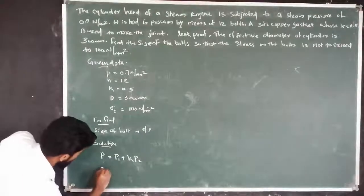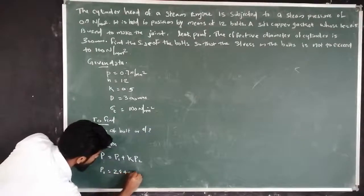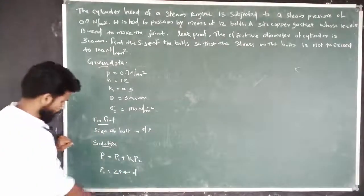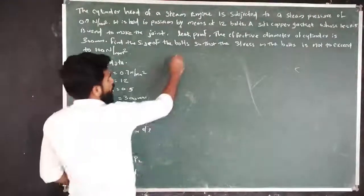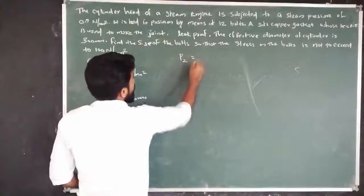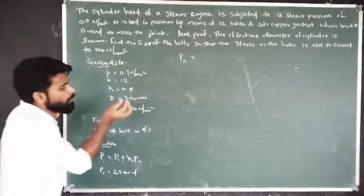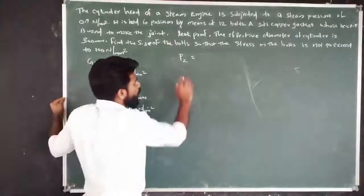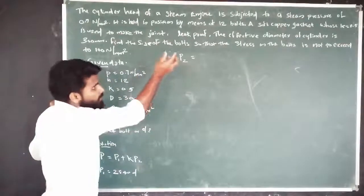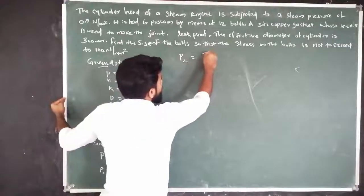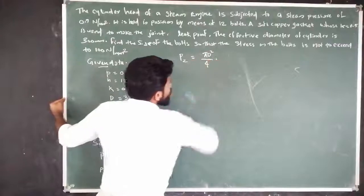P1 is the initial load, given by P1 = 2840D. Next, P2 is the external load, calculated as P2 = (π × D² / 4) × pressure × (1/N).